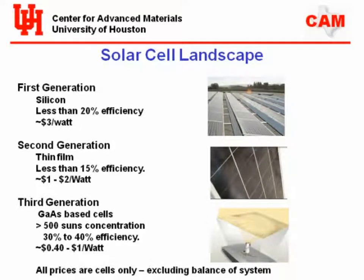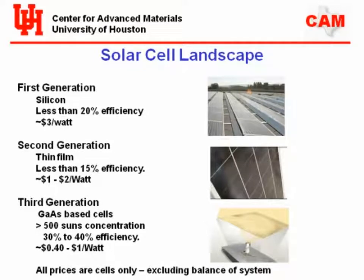Third generation cells are semiconductor-based, gallium arsenide-based. These work under high concentrations, with efficiencies up to 39.5% in production in the indium gallium arsenide system. They're expensive per unit. There are also organic solar cells, but these are only 4–5% efficient — very cheap but still very low efficiency, and real estate has value, so that factors into cost.